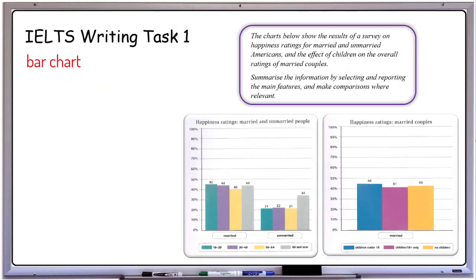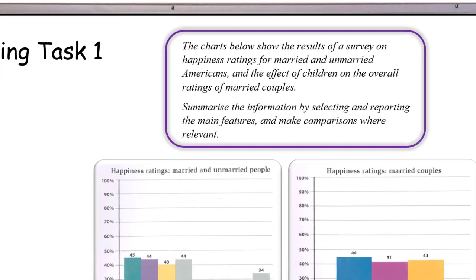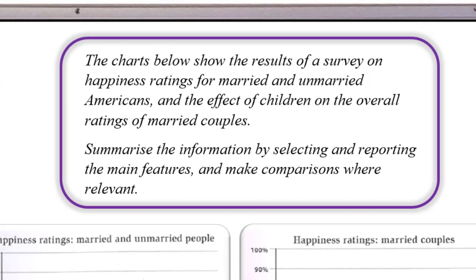Okay, here's an example of a bar chart. Of course, in this case, there are two bar charts, which is to be noted in our summary. The charts below show the results of a survey on happiness ratings for married and unmarried Americans, and the effect of children on the overall ratings of married couples. Summarize the information by selecting and reporting the main features and make comparisons where relevant.